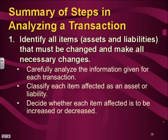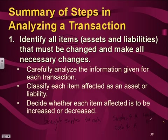For example, if you bought supplies for cash — let's think about that. Supplies goes up and cash goes down. Both of these are assets. No liabilities are affected, so liabilities has no change, and also owner's equity no change. So basically, the first step: identify all items. Here there are two items — supplies and cash.